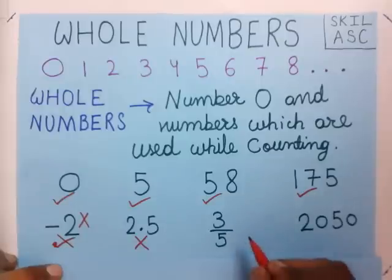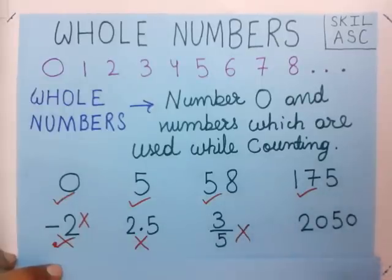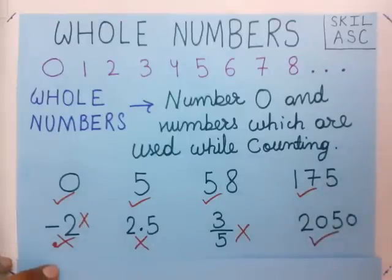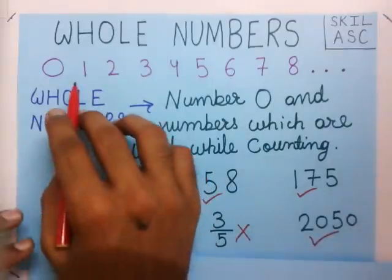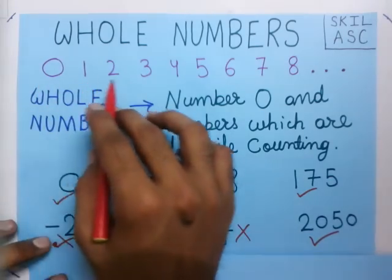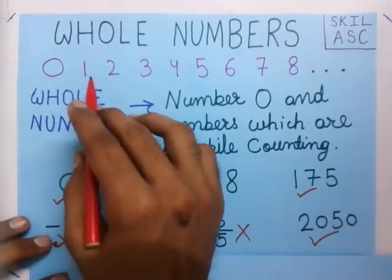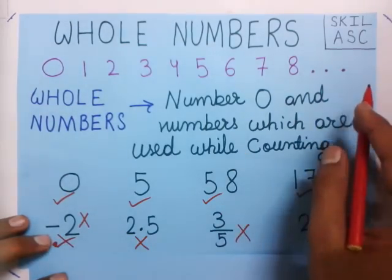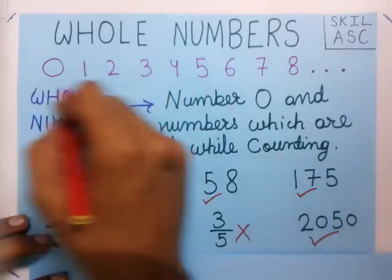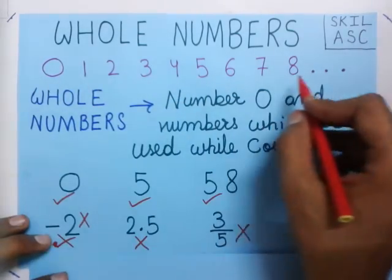Now, 2050 — this number is used while counting, so this is a whole number. Whole numbers are the numbers which are used while counting, and also the number 0 is included. So whole numbers are: 0, 1, 2, 3, 4, 5, 6, 7, 8, 9, 10, and so on.